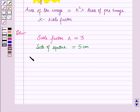Now we know that area of the square is equal to side into side, which is 5 into 5 cm square, which is further equal to 25 cm square.